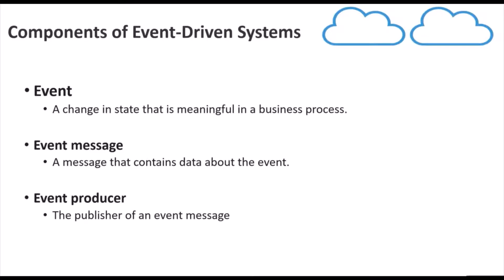What are the components of an event-driven system? First, we have an event. An event is nothing but a change in state that is meaningful to a business process. For example, in an online shopping system, the placing of an order is an event. Then we have an event message. An event message contains data about the event — for instance, the order number or the product ID could be the event message.